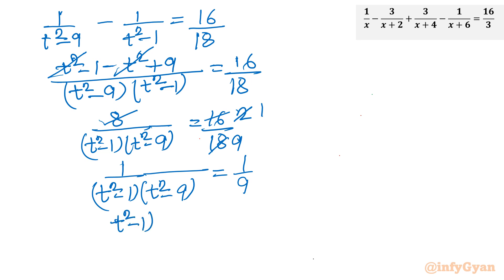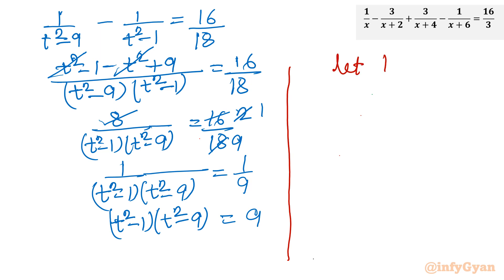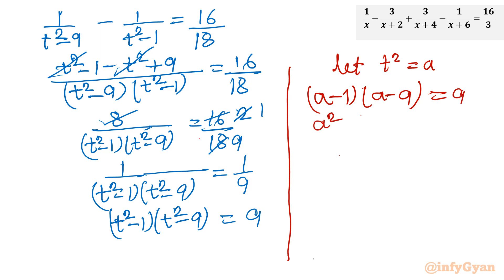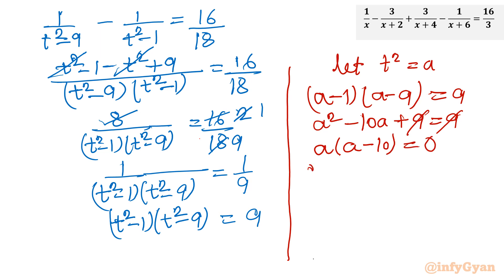So t squared minus 1 times t squared minus 9 equals 9. Let t squared equal a. Then a minus 1 times a minus 9 equals 9, giving a squared minus 10a plus 9 equals 9. The nines cancel, leaving a squared minus 10a equals 0. Taking a common: a equals 0 or a equals 10.